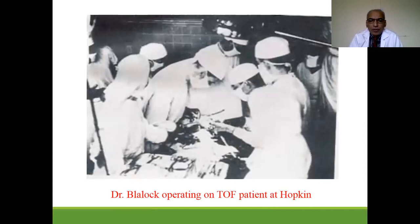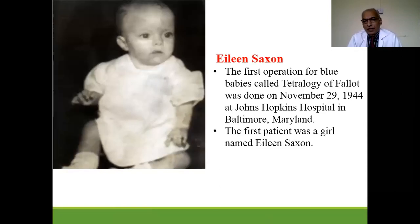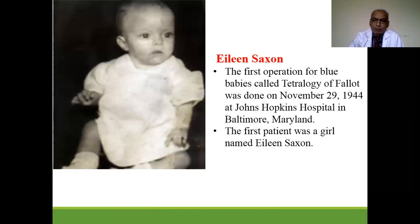Dr. Blalock performed the shunt surgery at Hopkins Institute, and the first patient was Elaine Saxon — the first Fallot patient — operated on 29th November at Johns Hopkins Hospital in Baltimore.